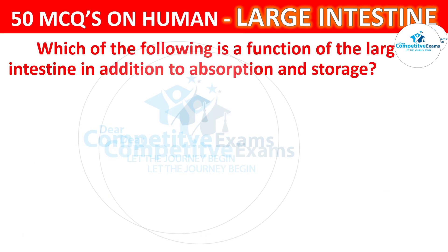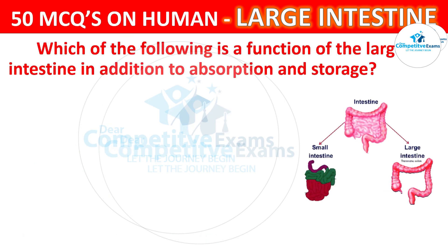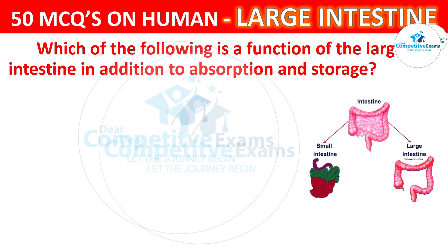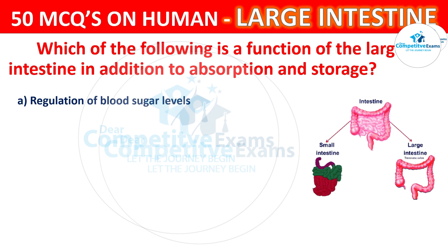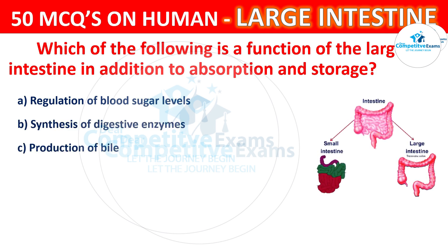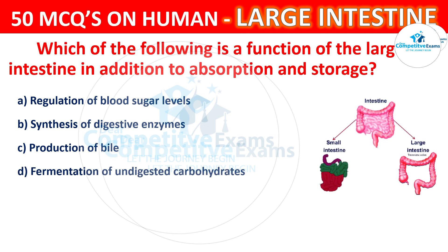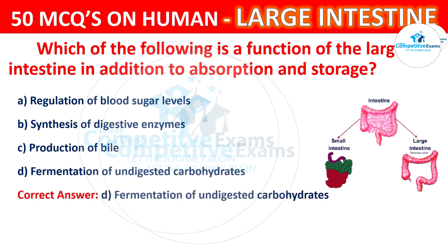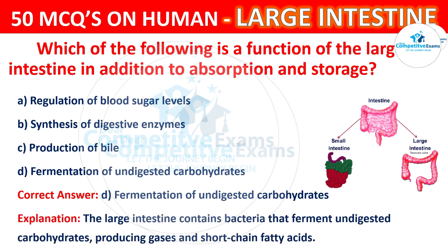Question number 33. Which of the following is a function of the large intestine in addition to absorption and storage? Your options are Regulation of blood sugar levels, Synthesis of digestive enzymes, Production of bile, or Fermentation of undigested carbohydrates. The correct answer is D, that is Fermentation of undigested carbohydrates. The large intestine contains bacteria that ferment undigested carbohydrates, producing gases and short-chain fatty acids.